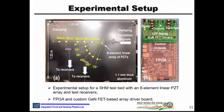For the experimental setup, we conducted experiments on a 1.1 millimeter thick aluminum sheet using a linear array of 8 elements. Receivers — shown as yellow dots — are placed at different distances and different angles. On the right, you can see the FPGA used and the custom-made PCB for our experiments. The switches on the FPGA are used to steer the beam, and the switches on the PCB are used to select the low-pass filter.